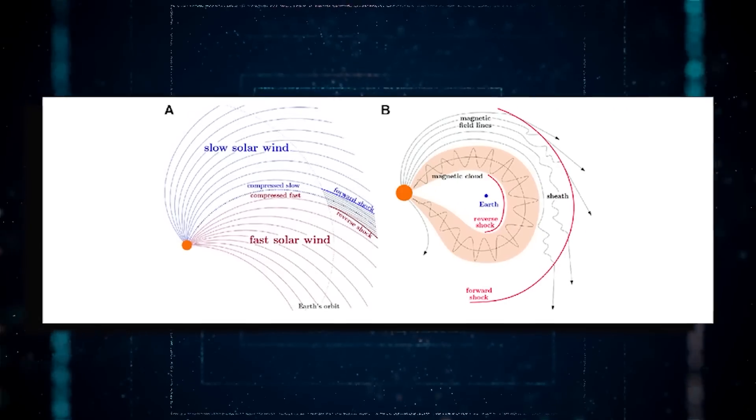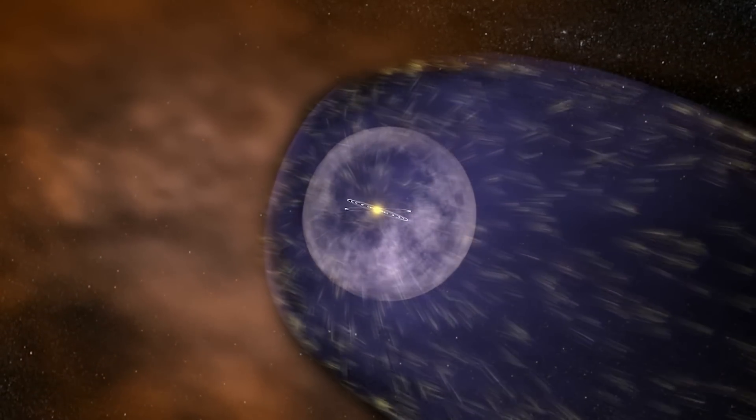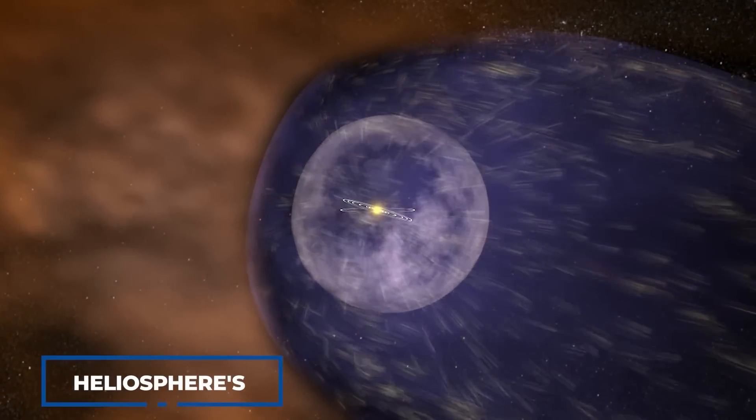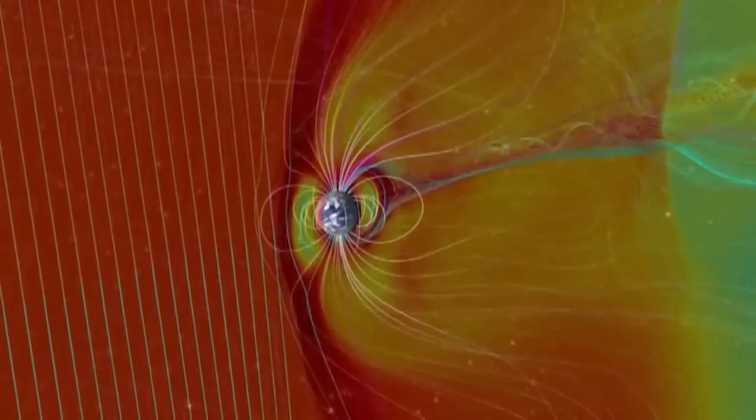This uncommon phenomenon is known as co-rotating interaction region, which occurs when fast and slow moving solar wind streams collide in the heliosphere's low and middle latitude regions comprising the solar magnetic field and the solar winds.